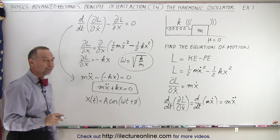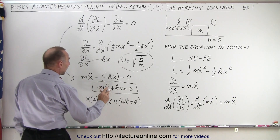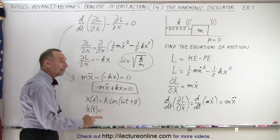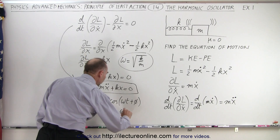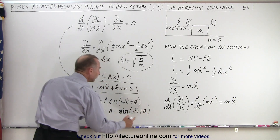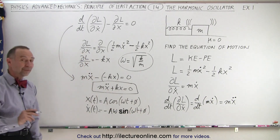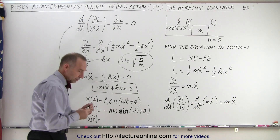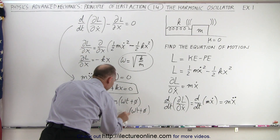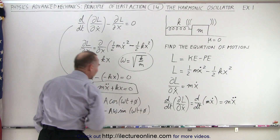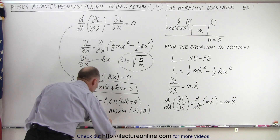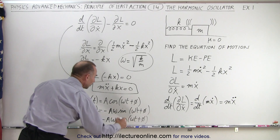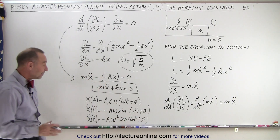Let's verify this is indeed the solution. Taking the first derivative, x-dot of t is the derivative of the cosine, which gives a negative sine, so it's minus A times the sine of omega t plus the phase angle, times the derivative of the angle, which is omega. Then taking the second derivative, x-double-dot of t: the derivative of the sine is the cosine, giving minus A times omega times the cosine of omega t plus the phase angle, times omega again — so we get minus A omega squared times the cosine of omega t plus the phase angle.